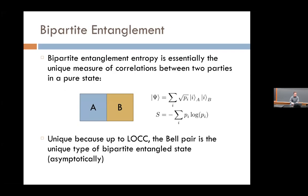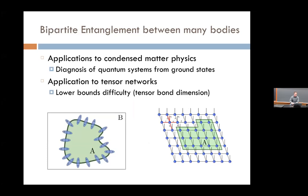To motivate tripartite entanglement, let me give a brief review of bipartite entanglement. When I say bipartite, I mean we're looking at properties of a pure state on two parties, or equivalently a mixed state on one party. Bipartite entanglement is essentially uniquely characterized by the entanglement entropy. In the asymptotic limit with many copies of a state, you can show that up to local operations and classical communication, the Bell pair is basically the unique type of entanglement.